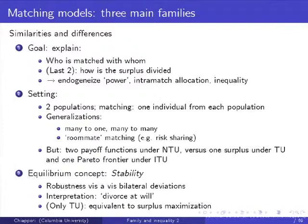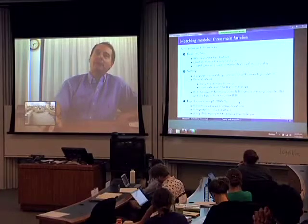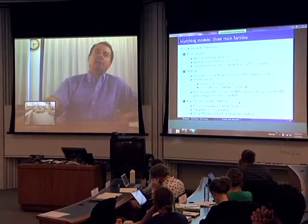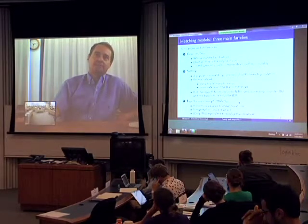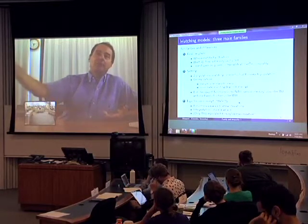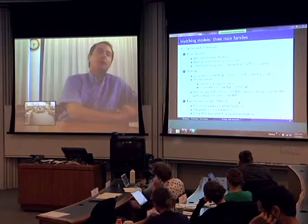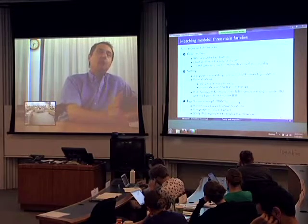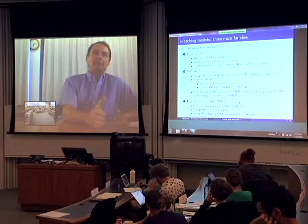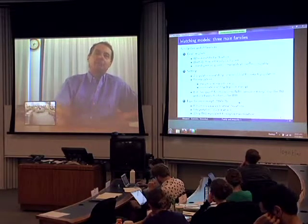In all cases the equilibrium concept is stability — robustness against bilateral deviation. A matching is stable if: A, you cannot find a married person who would rather be single, and B, you cannot find two people not currently married together who would both be better off being married together than in their current situation. What TU buys you — and I'll be more precise — is that stability is equivalent to the maximization of aggregate surplus, which is immensely useful.